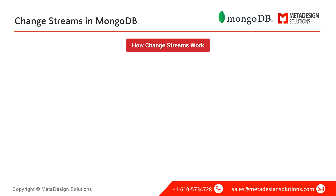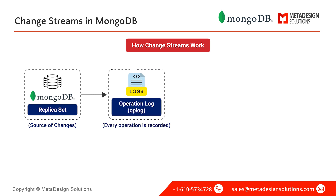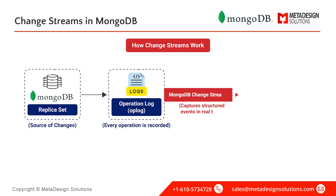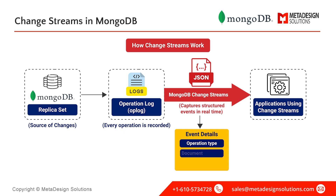So how does MongoDB capture these changes? Every operation in a MongoDB replica set is recorded in the operation log, also known as the op log. Change streams tap into this op log and stream structured events in a JSON-like format. Each event contains details like operation type — whether it's an insert, update, or delete — document changes showing the modified fields, and timestamps indicating when the change happened. Unlike traditional polling-based solutions, change streams don't add unnecessary database load, making them efficient and scalable.